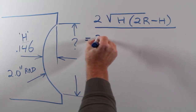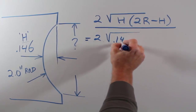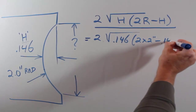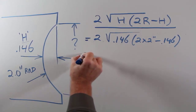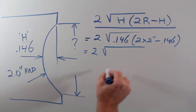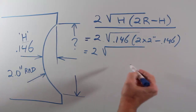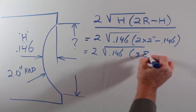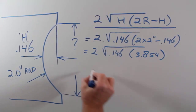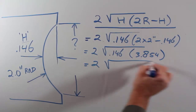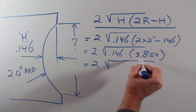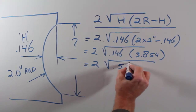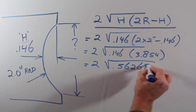Let's plug in the numbers. This equals two times the square root of 0.146 times (two times the two-inch radius, minus 0.146). Taking care of what's in the parentheses first, we get two times the square root of 0.146 times 3.854. Multiplying those together gives us 0.562684 inside the square root.